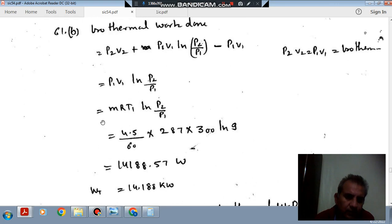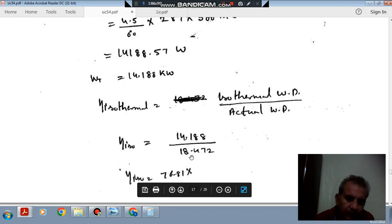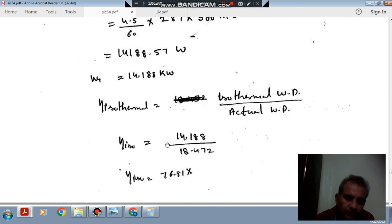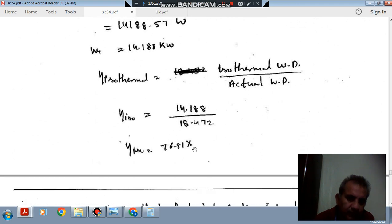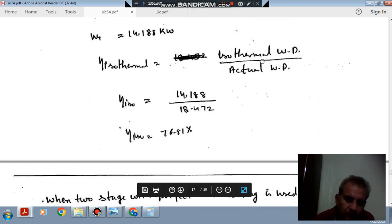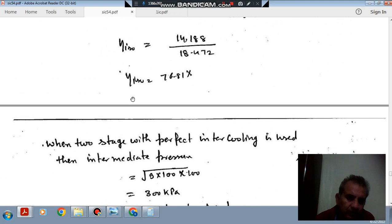This is isothermal work done. Isothermal efficiency is isothermal work done divided by actual work done, which is 14.188 kW divided by 18.470, so isothermal efficiency is 76.8%.